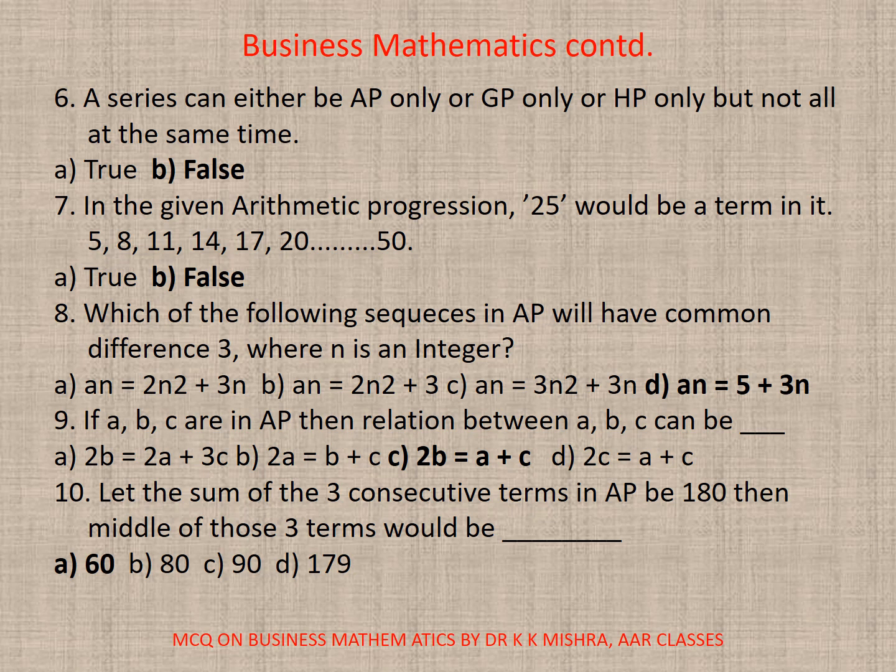Question 10. Let the sum of the 3 consecutive terms in AP be 180, then middle of those 3 terms would be dash. Now you need to apply the formula, you will find it to be 60, that is A option is correct.